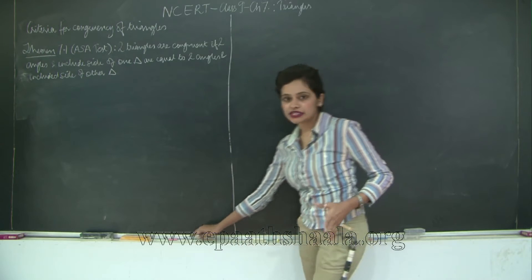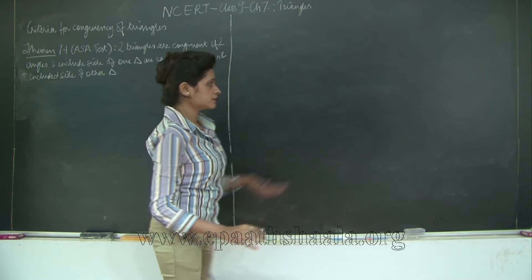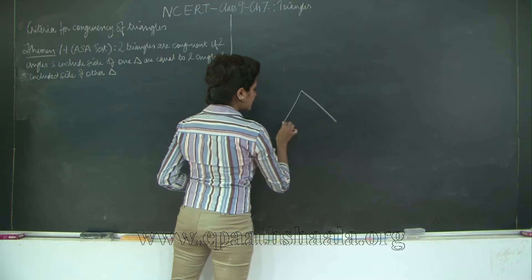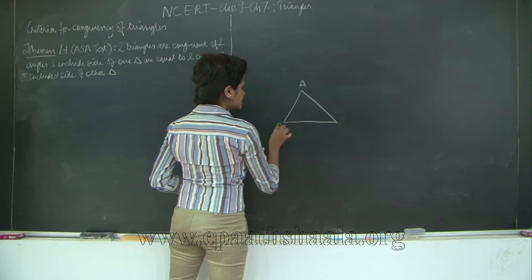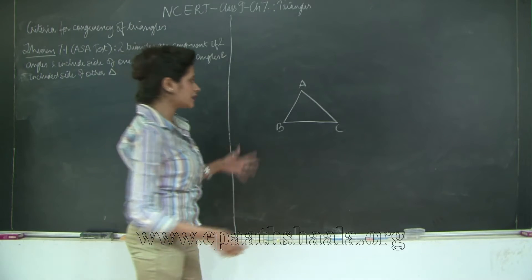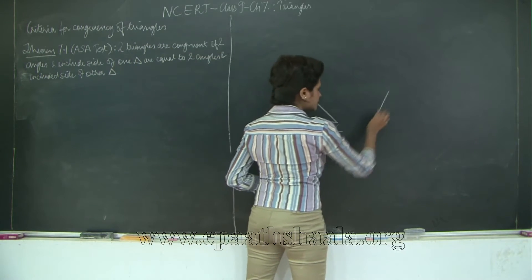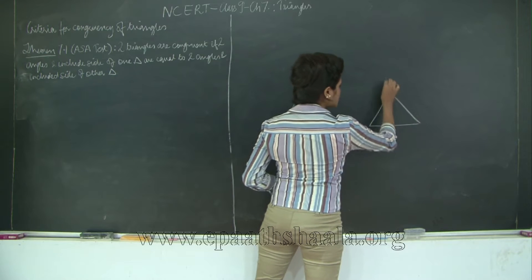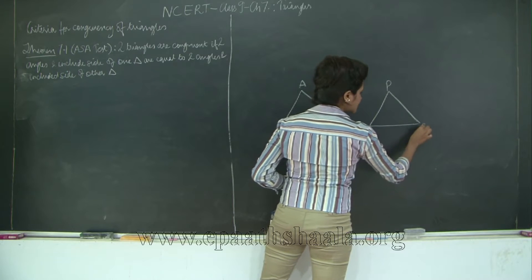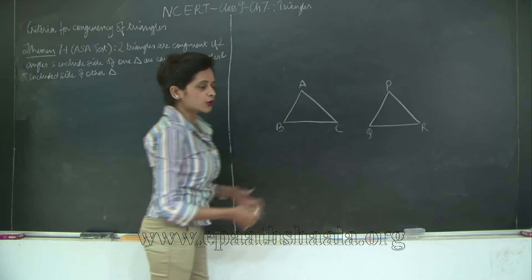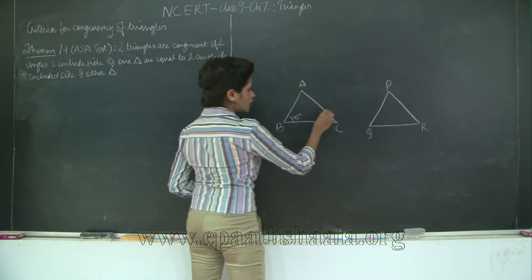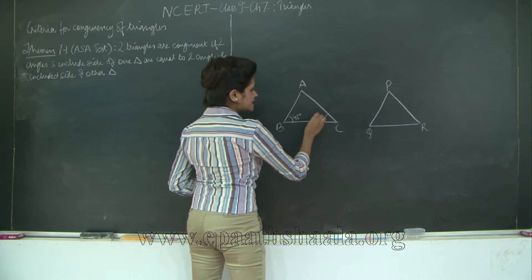There is a theorem, but before we proceed with the theorem I would like to show you something. If I have two triangles ABC and PQR — we are drawing repetitive figures but since this chapter is based a lot on congruency of triangles we will always have to consider two triangles. So if I have triangle ABC where angle B is 45 degrees and angle C is 60 degrees.